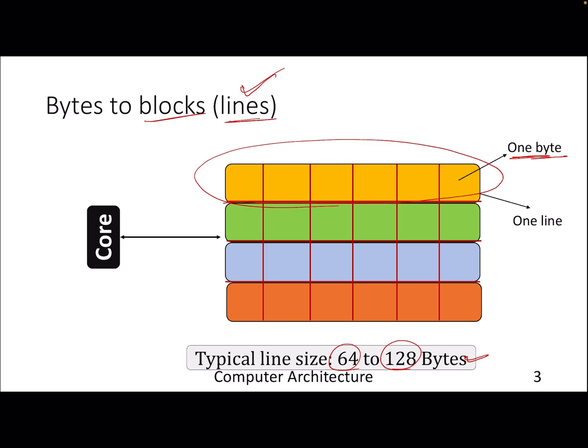A line is a collection of bytes. Typically, the last-level caches or mid-level L2 and L3 caches transfer the entire line to the upper level. But for an L1 cache, the processor demands for specific data.